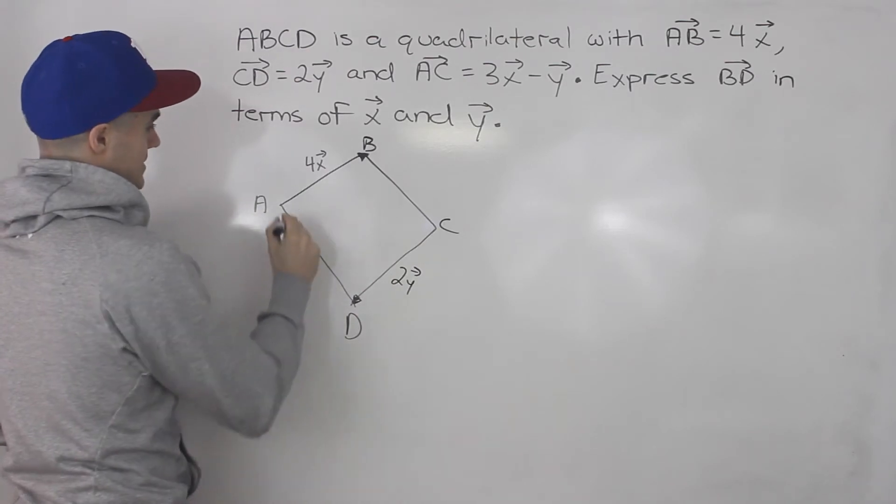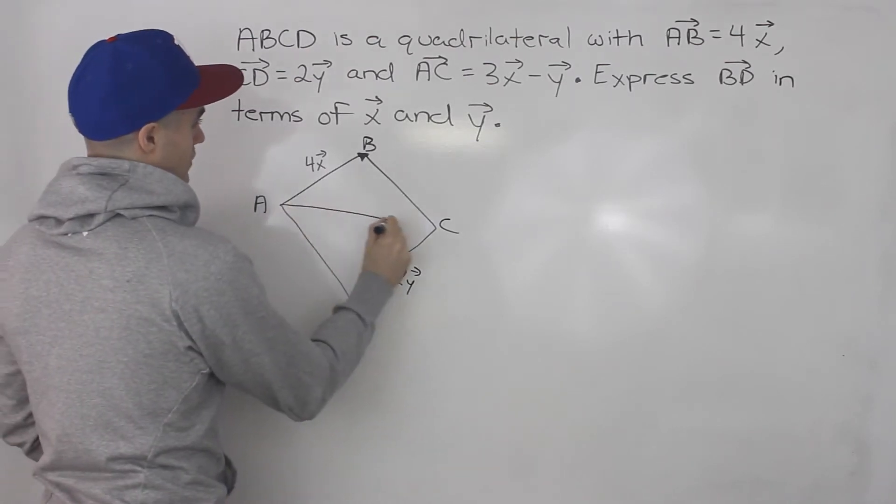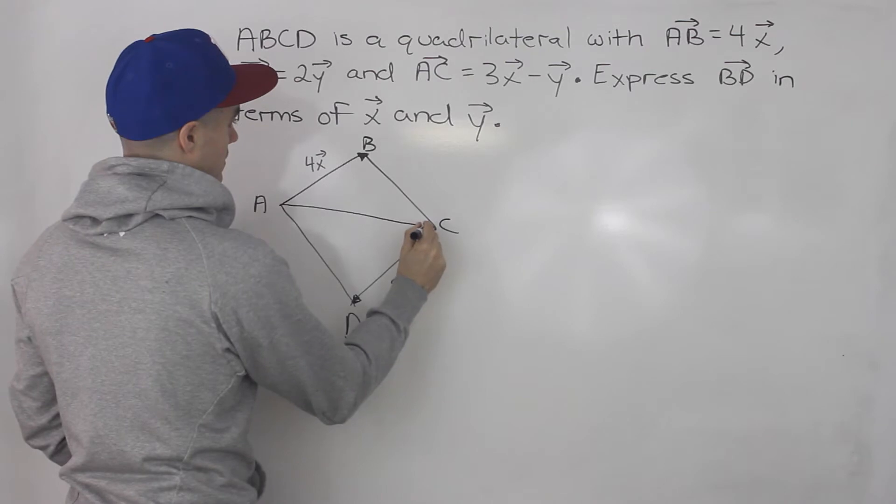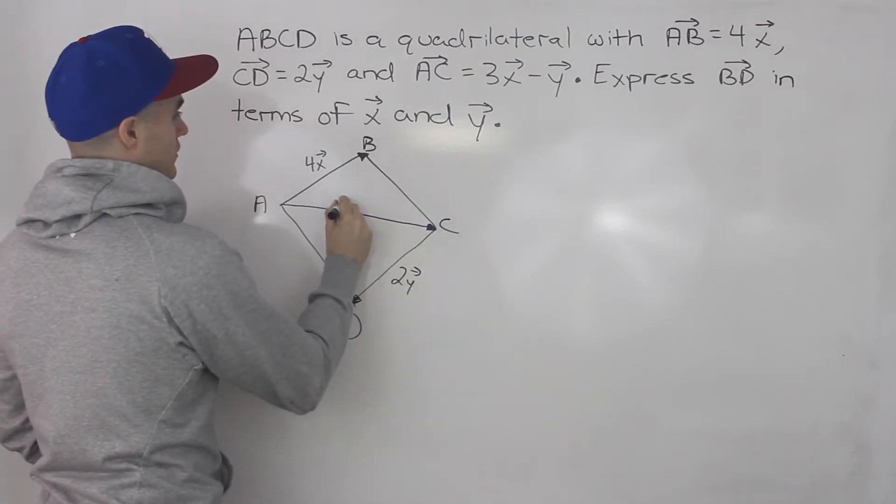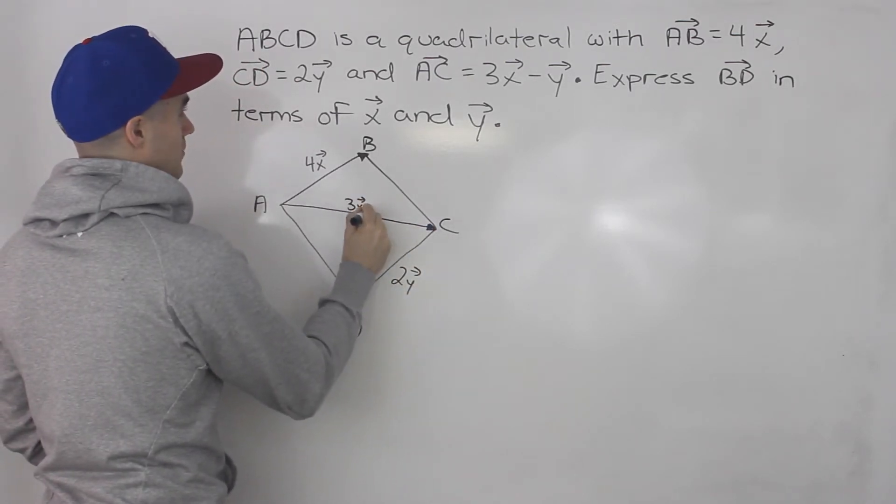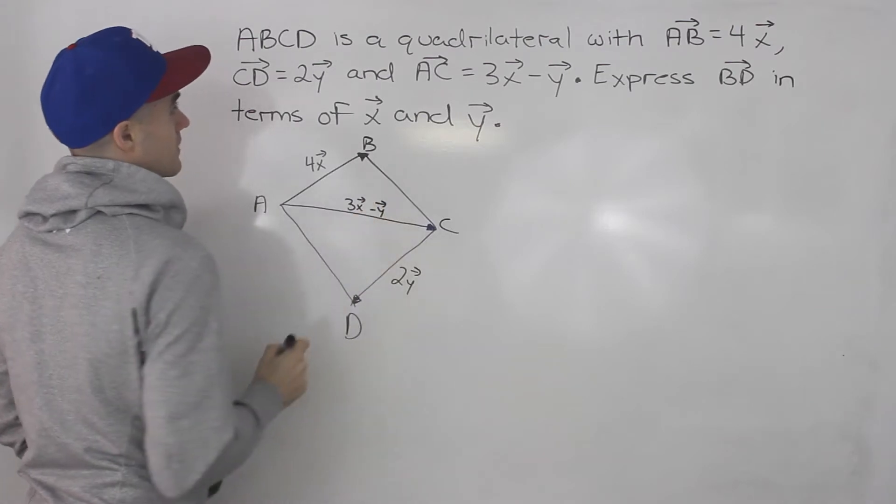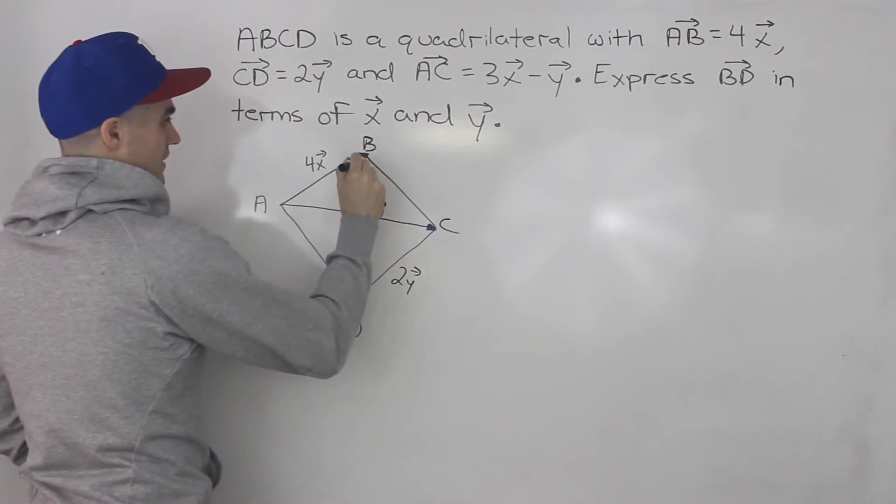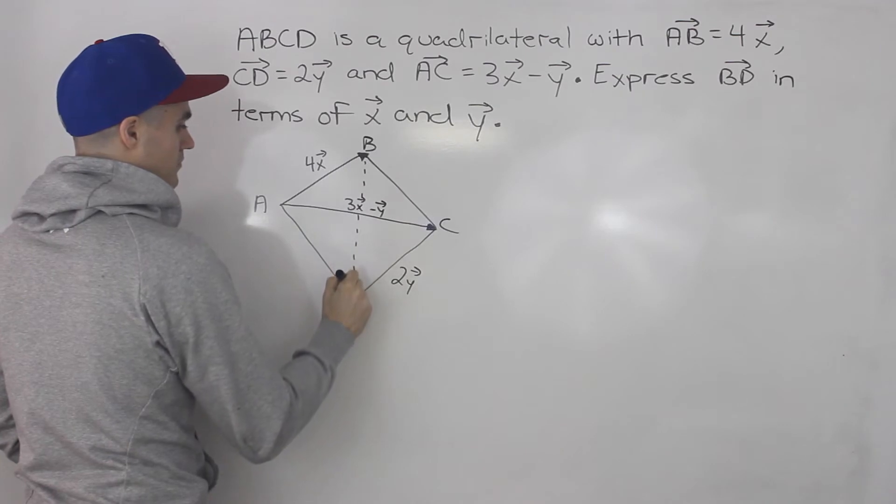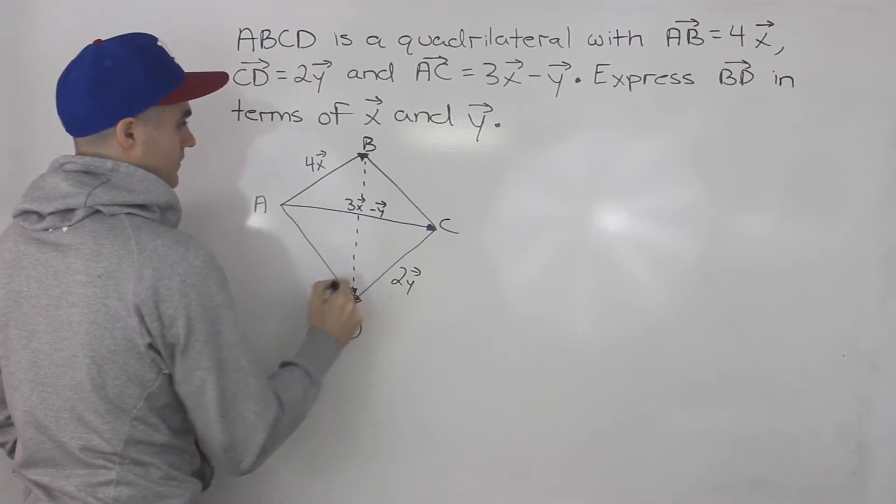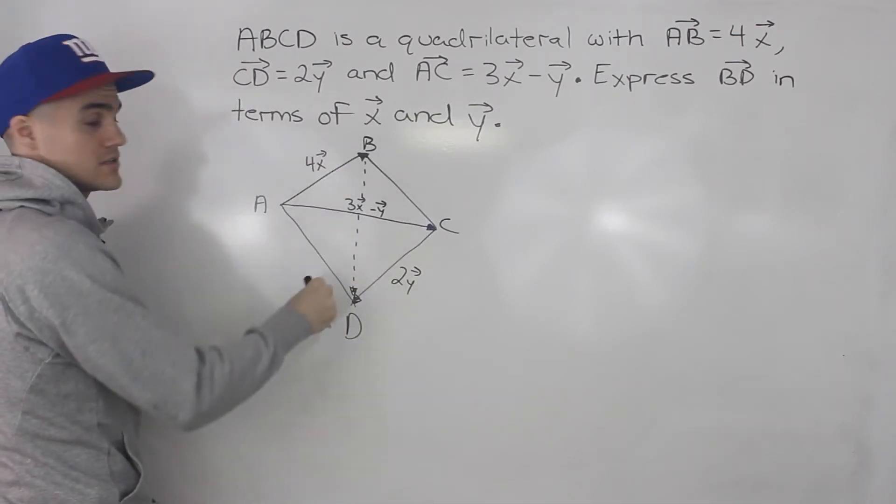And then vector AC, which is this over here, is 3X minus Y. And we need to express this vector here, BD, in terms of X and Y.